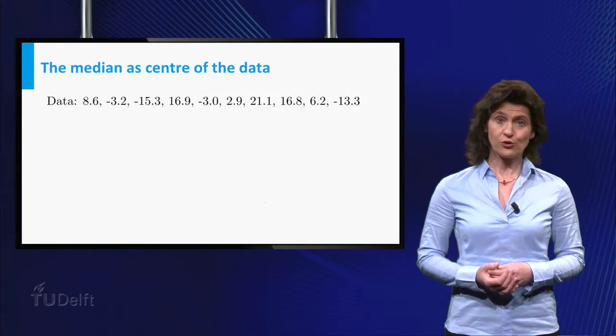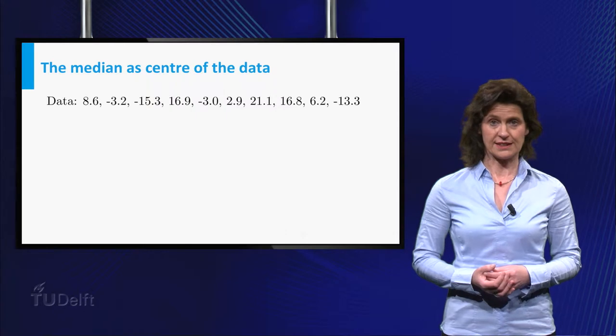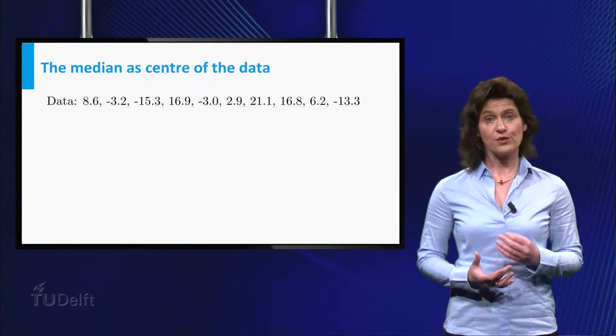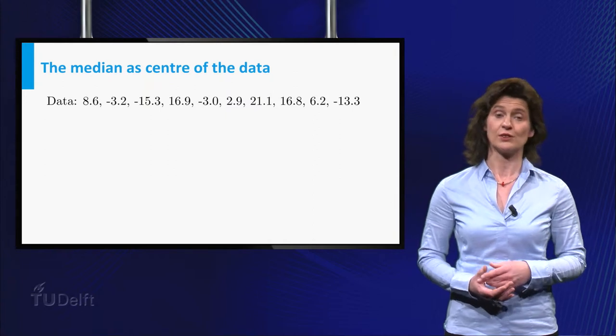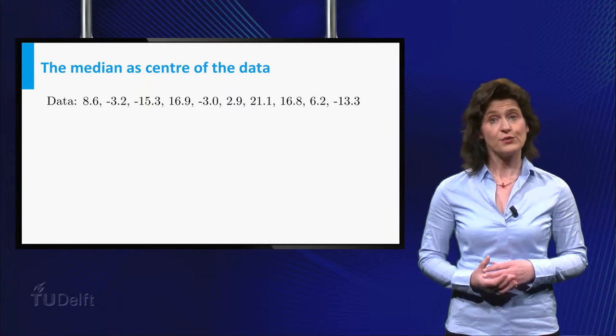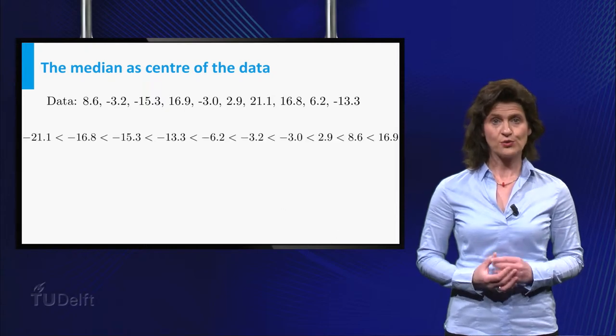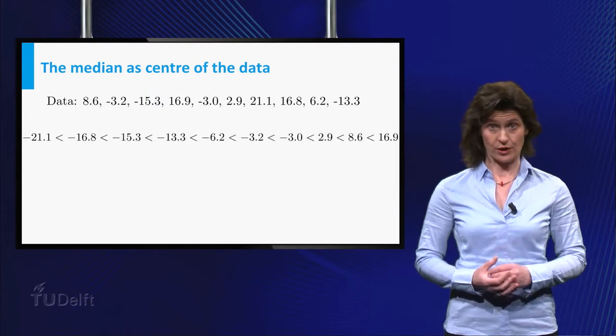The median is an alternative measure of location of a dataset. It is a value that is characterized by the statement that 50% of the data points are to the left of this point and 50% of the points to the right. To find the median, you first write the data in ascending order.